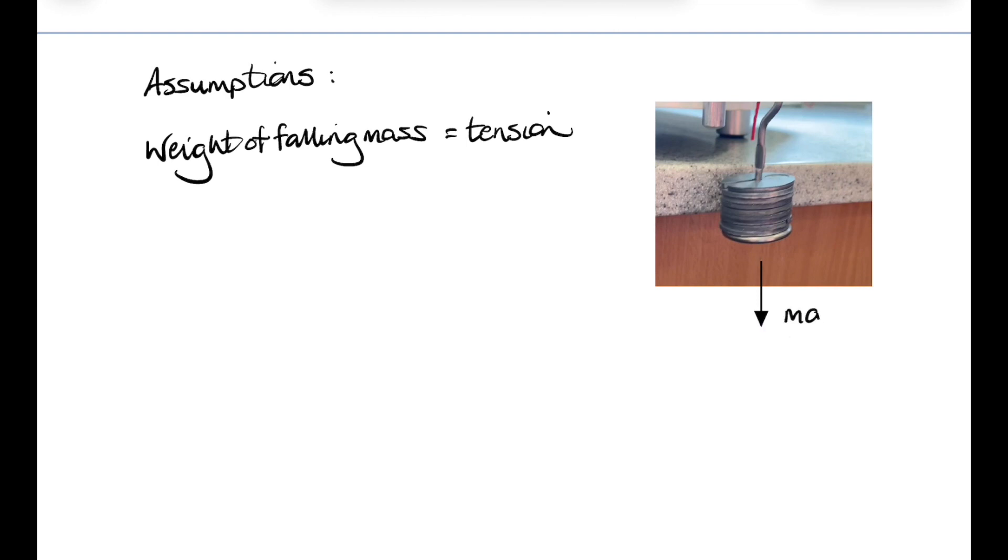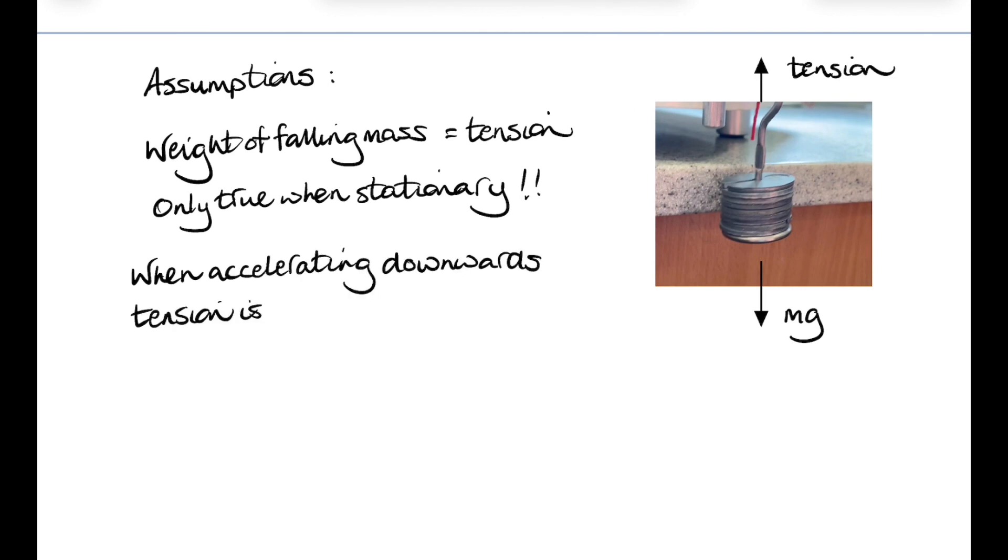But hold on, what about our assumptions? What did we assume here? Well, we assumed a couple of things. Firstly, that the weight of the falling mass is equal to the tension. Now that will only be true when the mass was stationary. When it's accelerating downwards, the tension will be less than the weight.